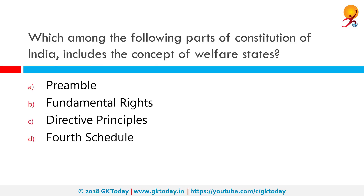Which among the following parts of the Constitution of India includes the concept of welfare states? The correct answer is Directive Principles. A welfare state is a concept of government in which the state plays a key role in the protection and promotion of the economic and social well-being of its citizens. It is based on the principle of equality of opportunity and equitable distribution of wealth. Directive Principles of State Policy aim to create social and economic conditions under which citizens can lead a good life, and also aim to establish social and economic democracy through a welfare state.